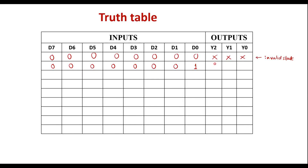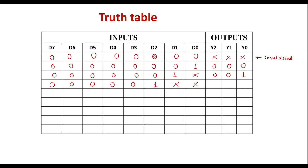When D0 line is high and all other lines are 0, the output of the encoder will be 0, 0, 0. If D1 line is 1, D0 is don't care, and the rest are 0, the output of the priority encoder will be 0, 0, 1 — irrespective of D0. When D2 line is high, irrespective of D1 and D0 (don't care), it gives priority to D2 and produces output 0, 1, 0.